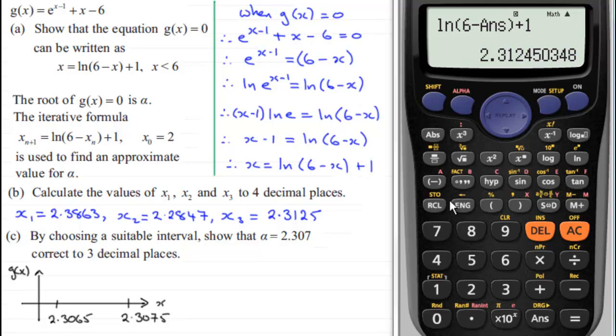So we just need to work out what g of the lower bound is going to be, g of 2.3065. Now if you pass this through your calculator, what you should find you get is a very small negative number, minus 0.000275 and so on. So I know the curve is starting below the x-axis here.